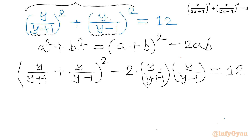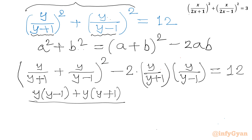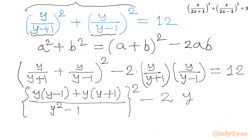Now I will simplify a bit. Let us take the LCM: y(y-1) plus y(y+1) over (y+1)(y-1). Then let us apply the difference of two squares formula, giving us y squared minus 1 in the denominator, so we get [y squared over (y squared minus 1)] whole square minus 2 times y squared over (y squared minus 1) equal to 12.